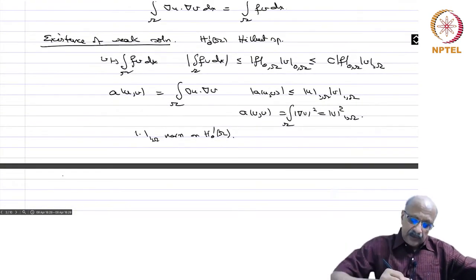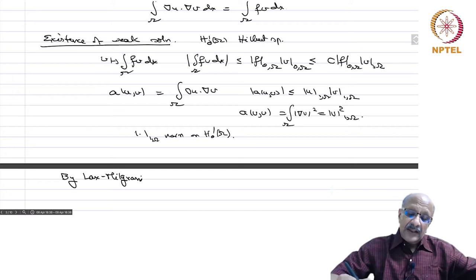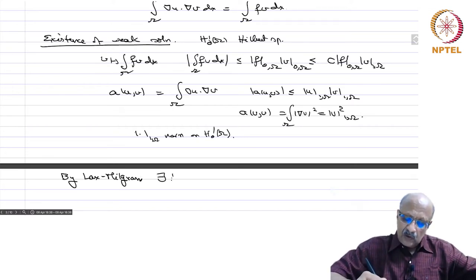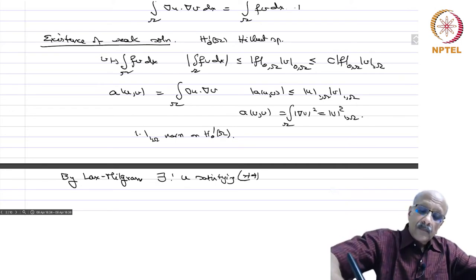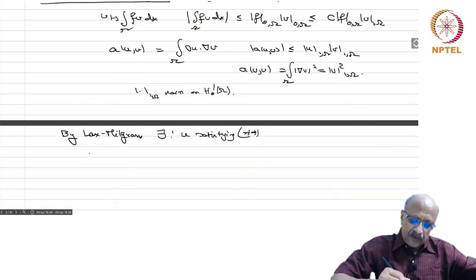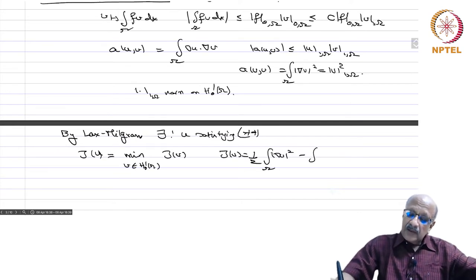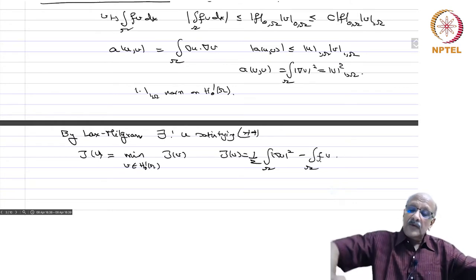So we have the solution. By Lax-Milgram, we have a continuous, symmetric, and elliptic bilinear form and a linear functional on the other side. Therefore, by Lax-Milgram there exists a unique u satisfying the weak formulation. Further, because of the symmetry of the bilinear form, u minimizes J over H^1_0(omega), where J(v) = one-half integral |grad v|^2 dx minus integral f v dx.